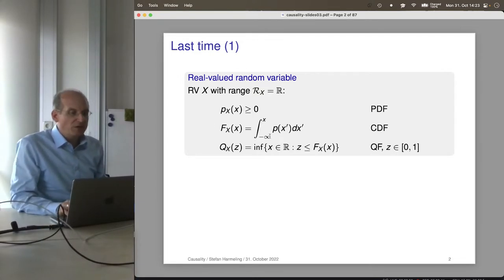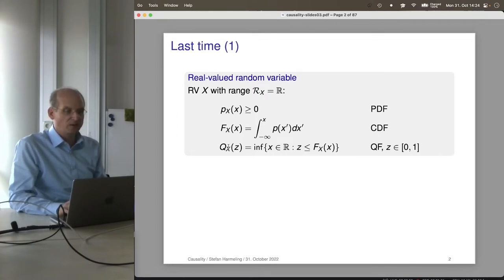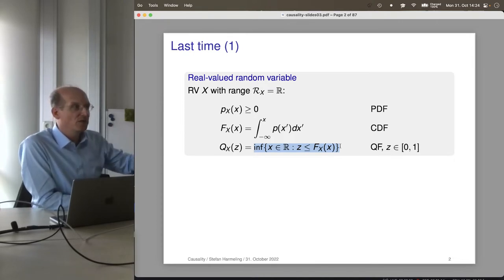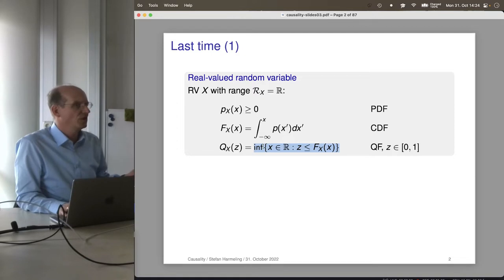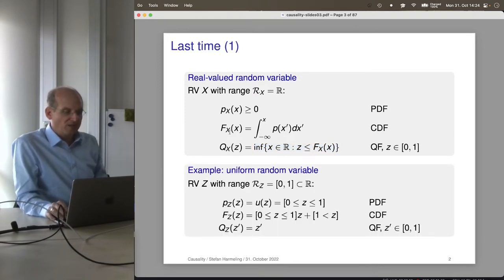Alternatively, we could integrate from minus infinity to X to get the cumulative distribution function. The information content is similar because taking the derivative of the CDF gives us the PDF. Then there's the inverse of the CDF, the quantile function, which we write with an infimum because the CDF might be constant at some value, so the inverse might not be defined. To always be defined, we take the infimum — the minimal X with a certain property.